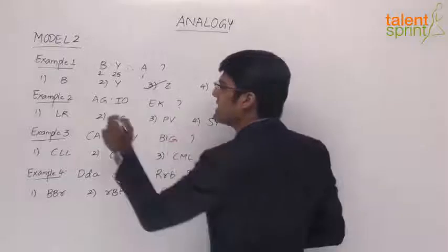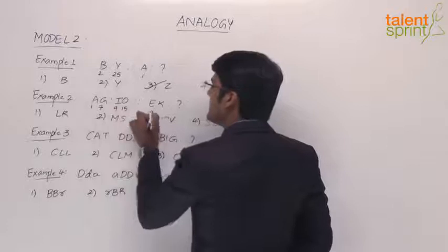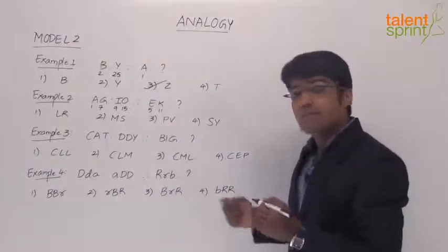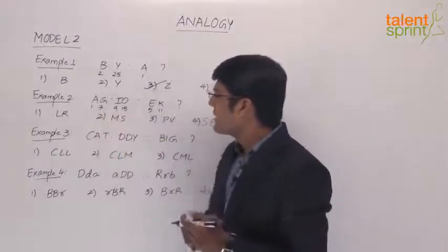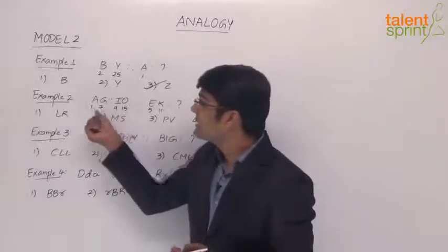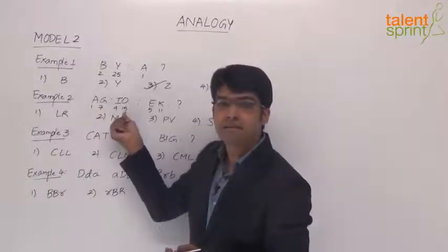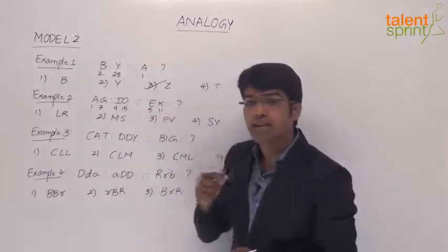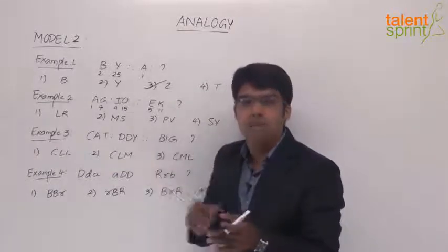Now if you look at the positions: A is the 1st letter, G is the 7th, I is 9th, and O is 15th. E is 5 and K is 11. What is the logic behind taking up these positions? We have 1 and 7, then 9 and 15. One common observation is 1 plus 6 is 7, and 9 plus 6 is 15. Even in this pair, 5 plus 6 is 11. So clearly, in each pair we are taking a particular position and then moving plus 6 positions in the forward direction.